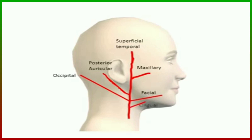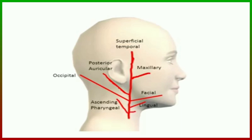The lingual artery arises from the anterior aspect. The ascending pharyngeal artery arises from the medial or deep aspect. The superior thyroid artery arises from the anterior aspect.